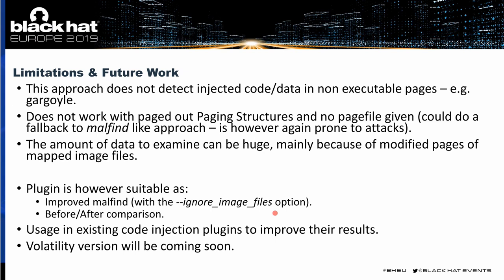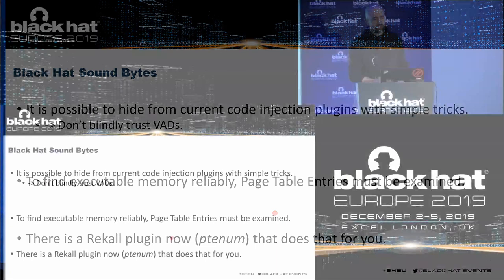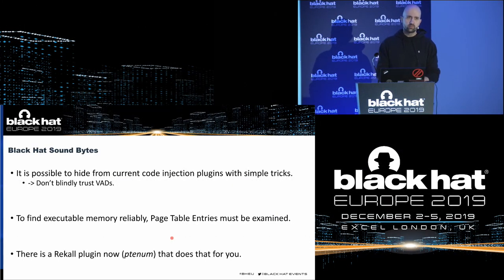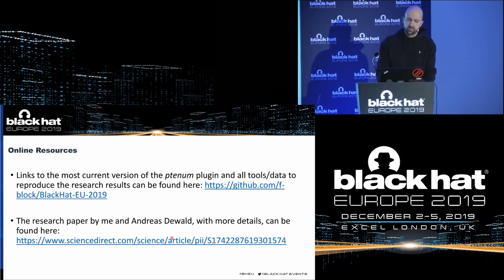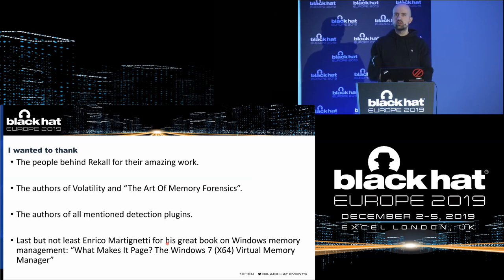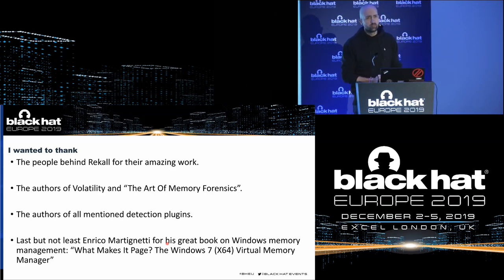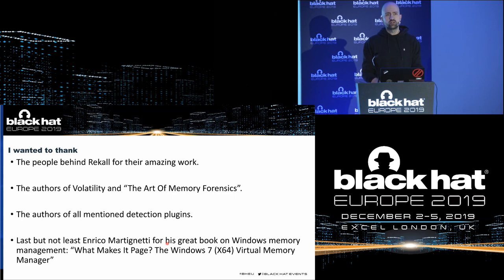Future work: hopefully we will have time to release a Volatility plugin too, so stay tuned. The key takeaways: it is possible to hide from current code injection detection with the mentioned hiding techniques. To find executable memory, you have to examine the page table entries, and there is now a plugin called PTEnum which can do this for you. The plugin is referenced on the GitHub repository. The paper with more details can be found there as well. Finally, I want to thank the authors of Rekall, Volatility, and all mentioned plugins, and Enrico Martinetti for his great book What Makes a Page? — The Windows 7 Virtual Memory Manager. Thank you for your attention.